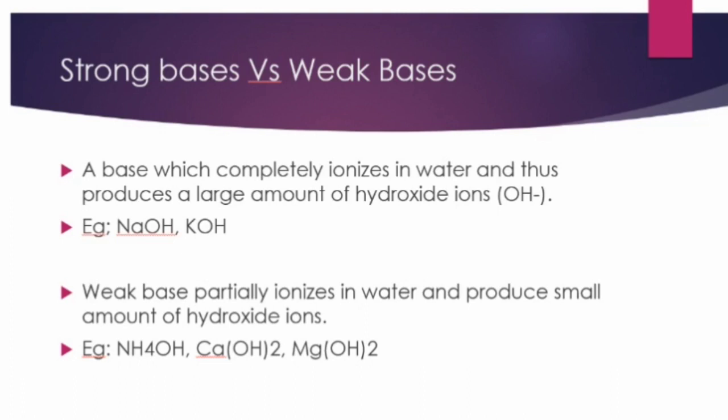Just as we learned about strong and weak acids, strong and weak bases also exist. A base which completely ionizes in water and produces a large amount of hydroxide ions is called a strong base — for example, sodium hydroxide or potassium hydroxide. A weak base partially ionizes in water and produces only a small amount of hydroxide ions — for example, ammonium hydroxide, calcium hydroxide, and magnesium hydroxide.